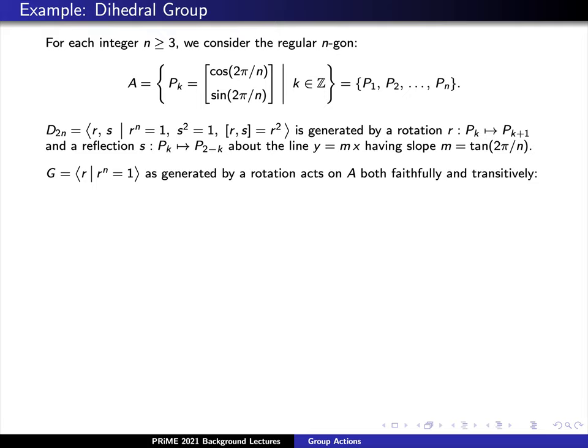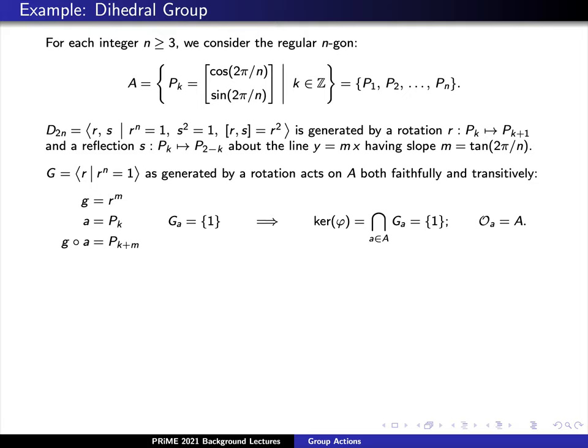We'll actually see that G is an action that acts on A both faithfully and transitively. Pick a typical element G from the set capital G. Well, since the set capital G just consists of rotations, every rotation will just be a power of R. So let's write lowercase g as R to the m for some integer m. Similarly, let's pick a vertex on our regular n-gon. Let's denote this vertex lowercase a as P sub k. It's easy to check by induction that we have an action G times a, which sends P sub k to P sub k plus m. Using this, we can now see that the stabilizer of our point a, namely G sub a, is just the trivial rotation. That is, the only way in which we're going to rotate a point P sub k and leave it alone is if the original rotation were just the identity rotation to begin with.